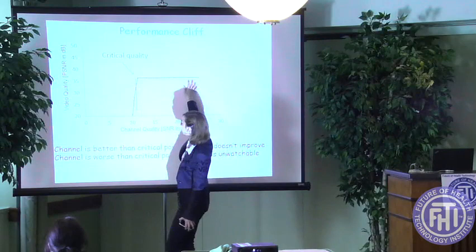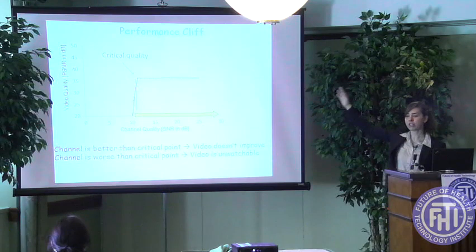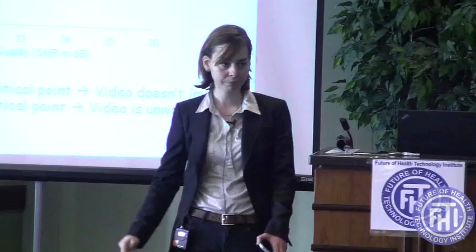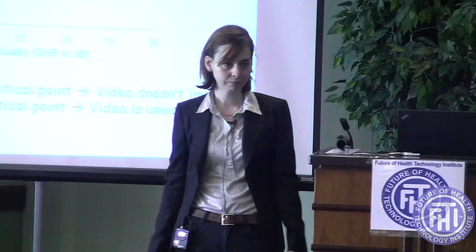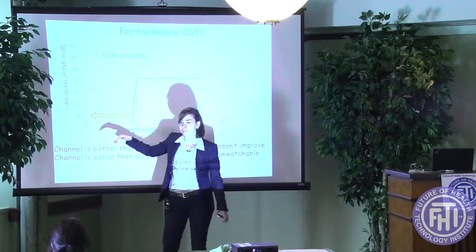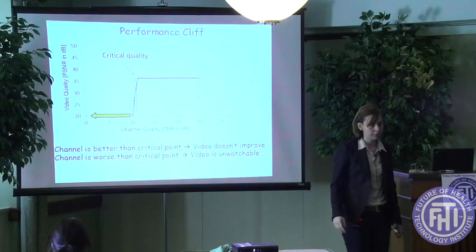The video quality shows a cliff graph. If you improve the channel quality beyond that critical point, the video quality doesn't improve — it levels off. And if the channel quality goes below that point, the video becomes unwatchable. You cannot extract any useful information from that video. That's what creates glitches and stalls: whenever the channel quality varies and you fall off this cliff, you get a glitch or a stall if the falling off persists too long.